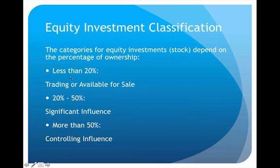One possibility is that the amount of stock I own could represent less than 20% ownership. If that's the case, I have two options: I could classify this as either a trading or available-for-sale investment. It's also possible that my investment will represent 20 to 50% ownership, in which case I have to account for it under significant influence. If I own more than 50% of the stock, I have to use controlling influence. We always want to pay close attention to the percentage of ownership.